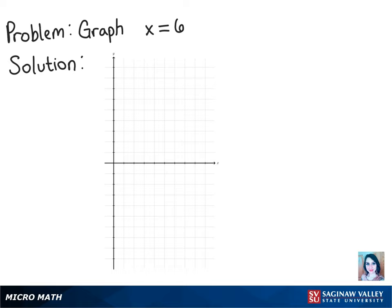To graph x equals 6, we know that for every y value, x has to still be 6. So we can start graphing at y equals 0, and then it doesn't matter from there.